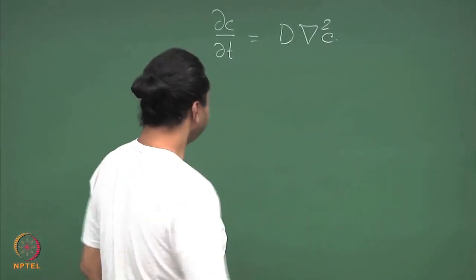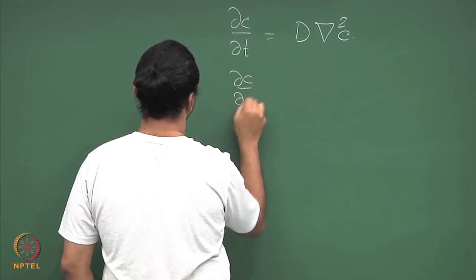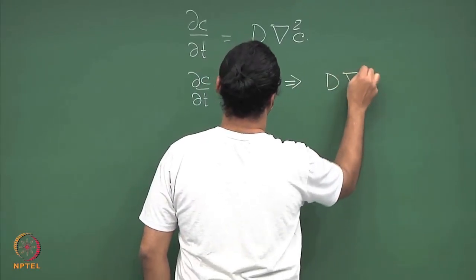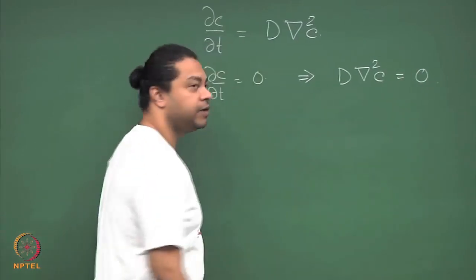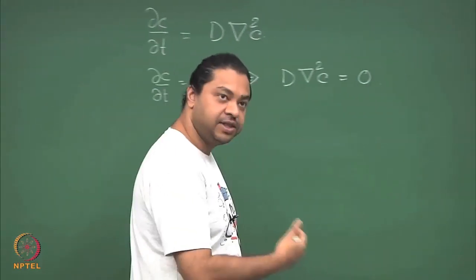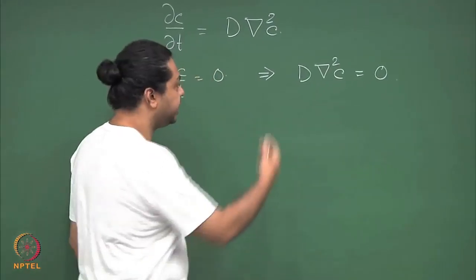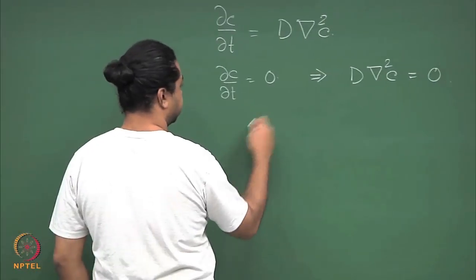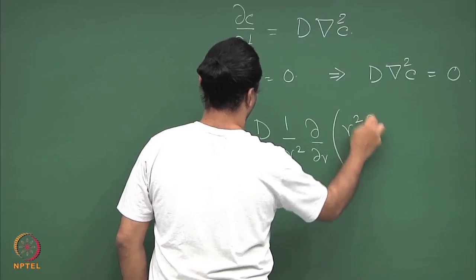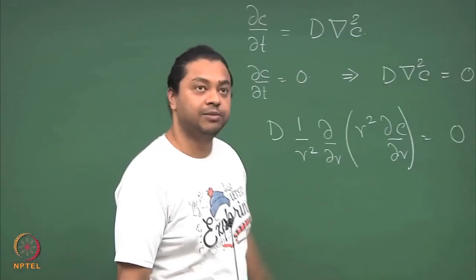I want to solve this in the steady state, where nothing is changing with time, so ∂c/∂t = 0. The equation to solve is therefore D∇²c = 0. Given the spherical symmetry, I write the Laplacian in spherical coordinates: D · (1/r²) · ∂/∂r(r² · ∂c/∂r) = 0.